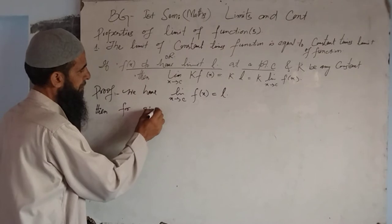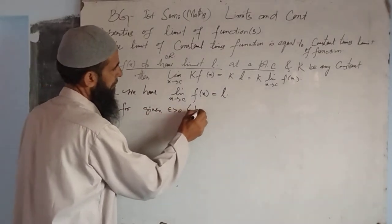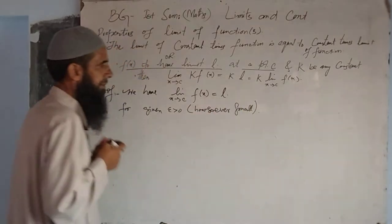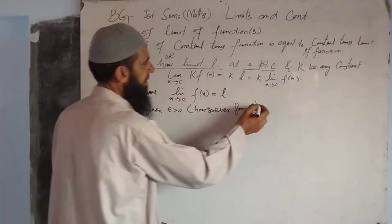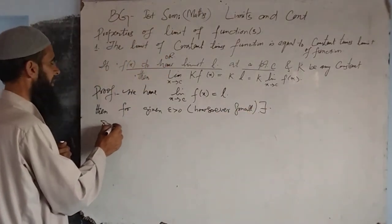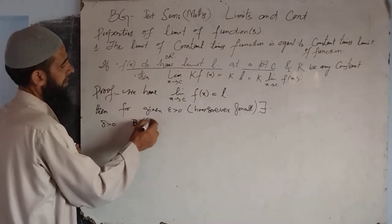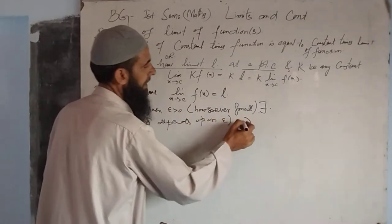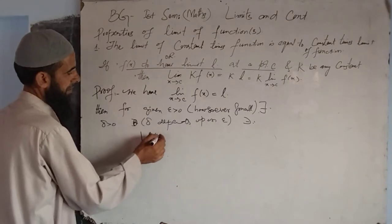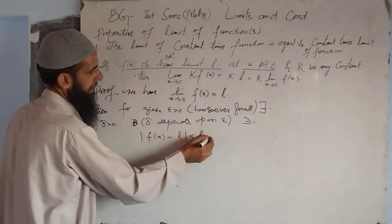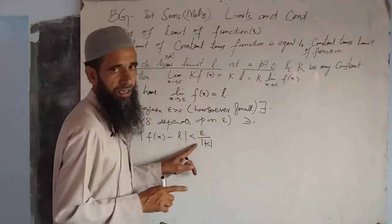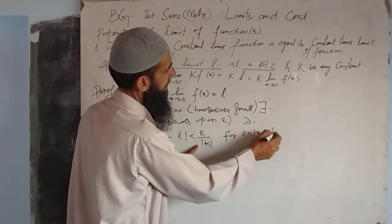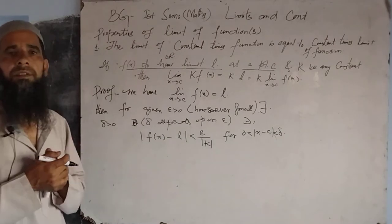We use the epsilon-delta definition. For a given epsilon greater than zero, however small, there exists a delta greater than zero — delta depending upon epsilon — such that the modulus of f(x) minus l is less than epsilon over modulus of k, for all x where 0 is less than modulus of x minus c is less than delta.